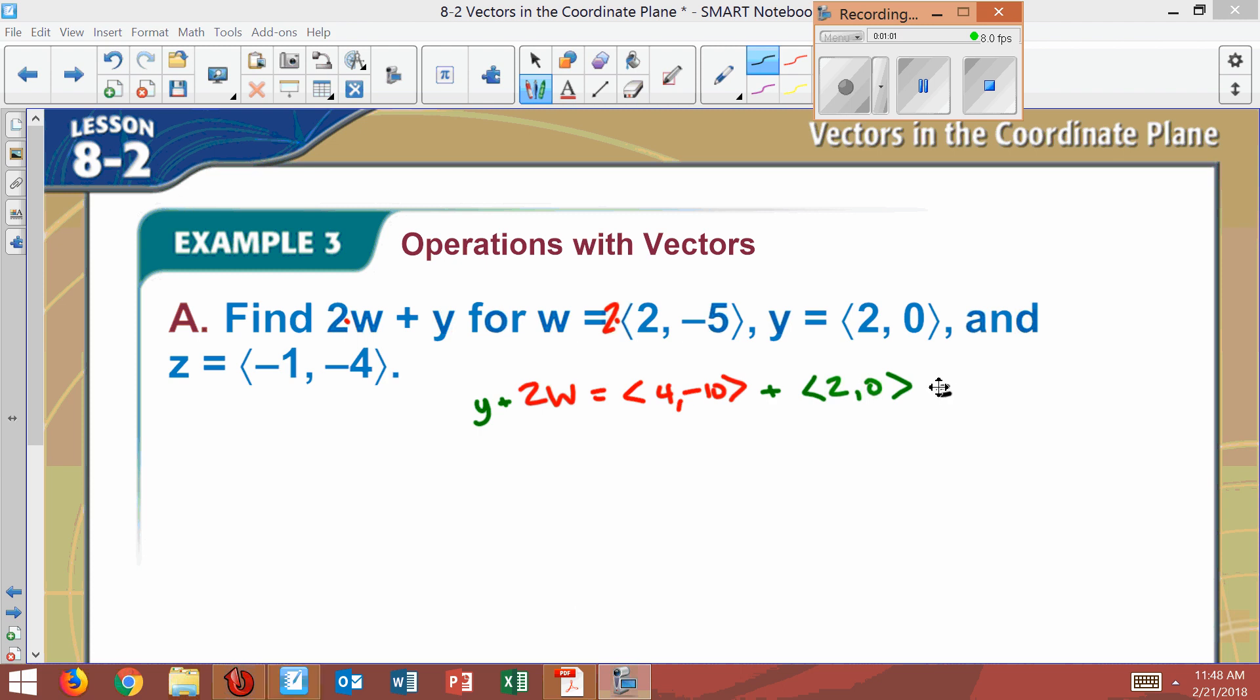So when you add, the x's stay together. It's like they're the common terms, so x plus x, which is 4 plus 2, which gives us 6. And then y plus y, which would give us negative 10. This would be our value here.